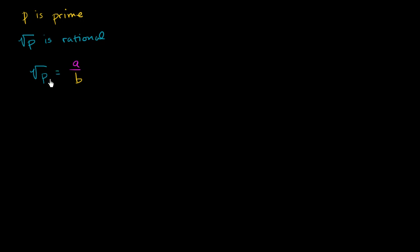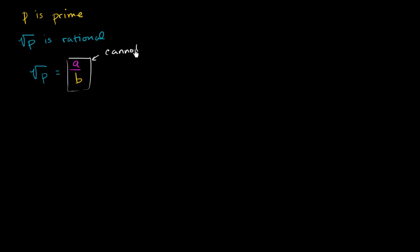This being rational says I can represent square root of p as some fraction, as some ratio of two integers. And if I can represent anything as a ratio of two integers, I can keep dividing both the numerator and the denominator by the common factors until I eventually get to an irreducible fraction. So this cannot be reduced — and this is important for our proof — which is another way of saying that a and b are co-prime, which is another way of saying that a and b share no common factors other than 1.